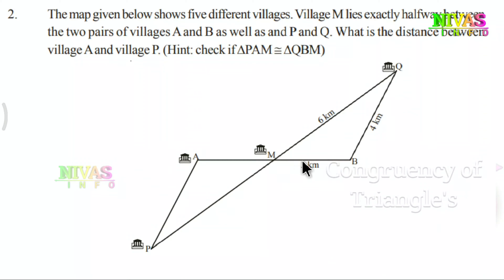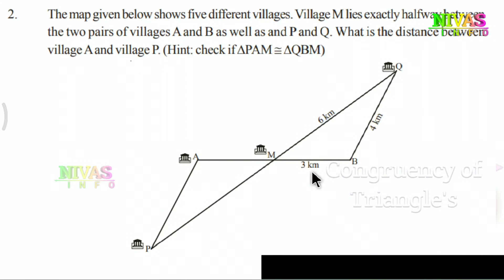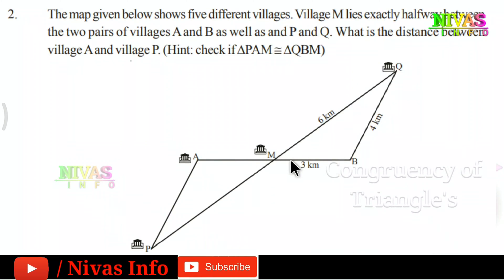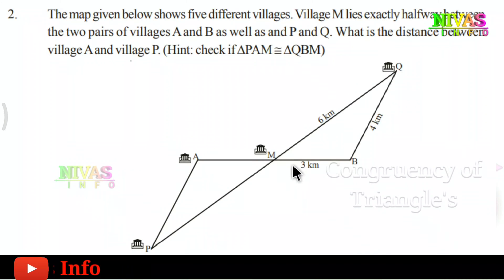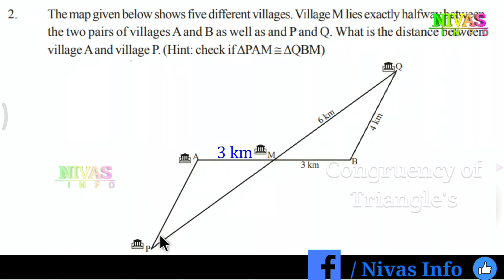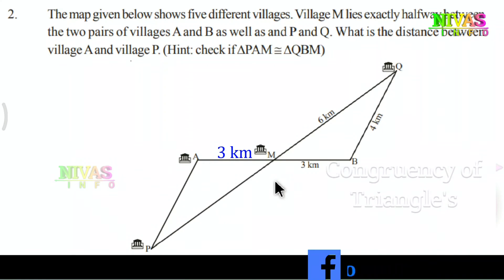Here is M. M to B is 3 kilometers. We are given that A and B have equal length from M, so M to A is also 3 kilometers. Next, P and Q have equal distance, and that distance is 6 kilometers.